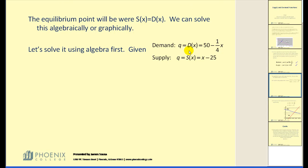Well, if we want to know when these two functions are equal to each other, we can simply set 50 minus one-fourth X equal to X minus 25. This is our demand function. This is our supply function. Let's solve for X.